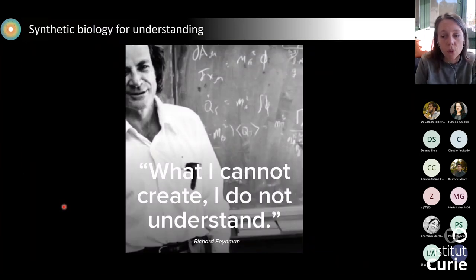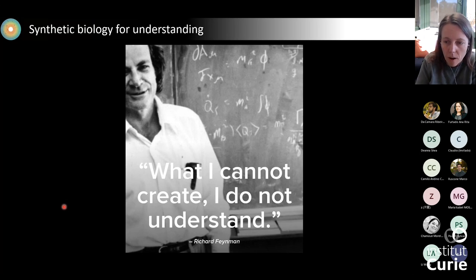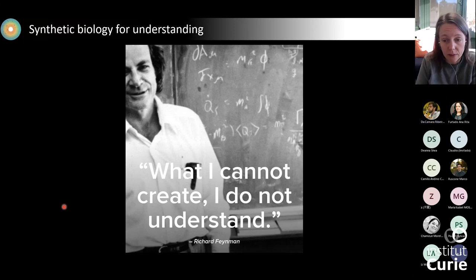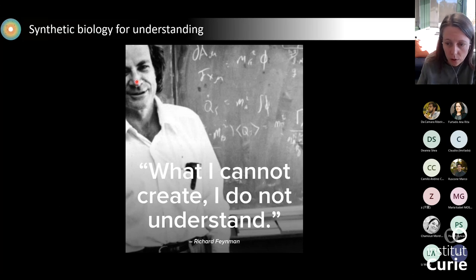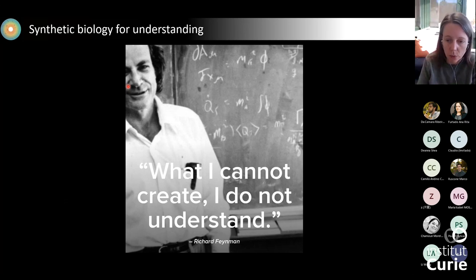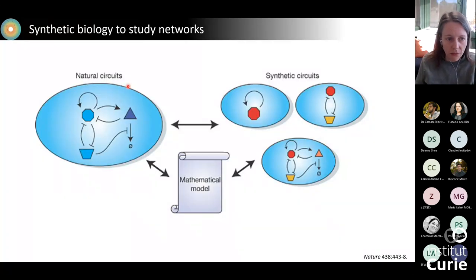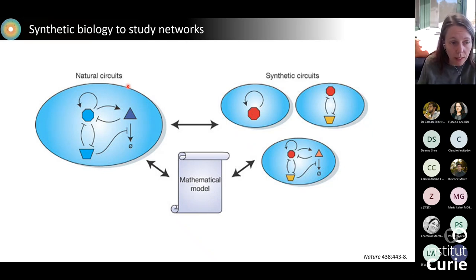In addition to many potential applications, synthetic biology also provides a powerful bottom-up approach to understanding the general principles of biological systems by building simplified versions that are easy to study. The quote found on the blackboard at the time of death of Richard Feynman nicely captures this approach. This figure illustrates this approach for studying gene regulatory networks, showing the interplay between natural circuits, synthetic circuits, and mathematical modeling.